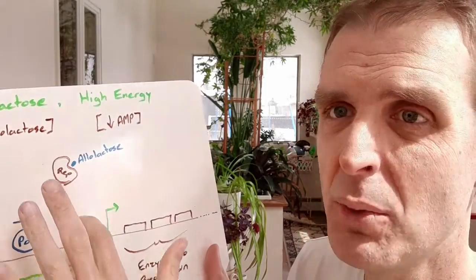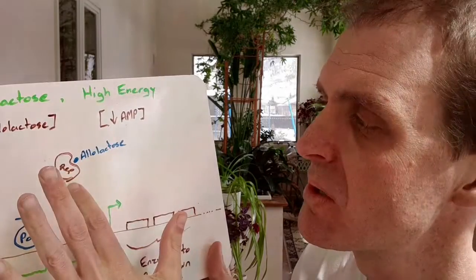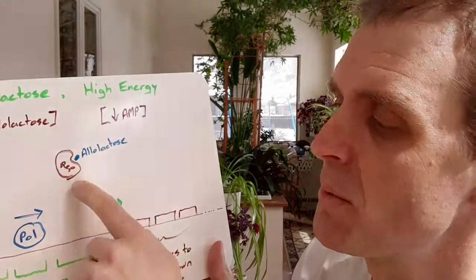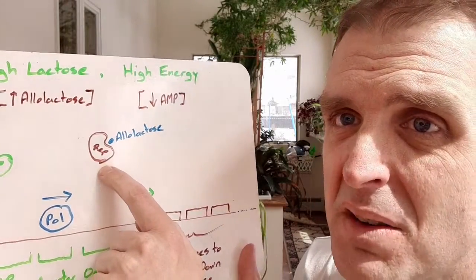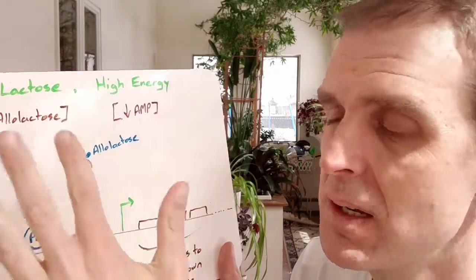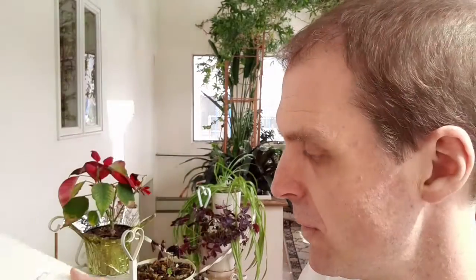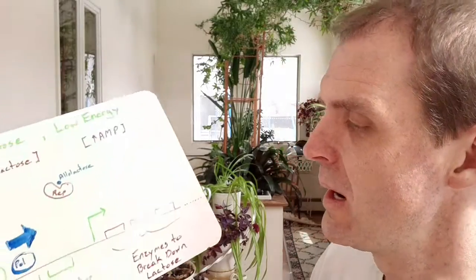So this is another one of those spots where we have to kind of flip our thinking about the trp operon compared to the lac operon. We want to be able to break down lactose if lactose is around, and so without even having to memorize it, we can just remember if lactose is around, we don't want a repressor in the way. So then we draw our repressor up here with the allolactose. I don't have to memorize exactly whether the repressor is bound or not when it's bound to the allolactose. I can just think it through.